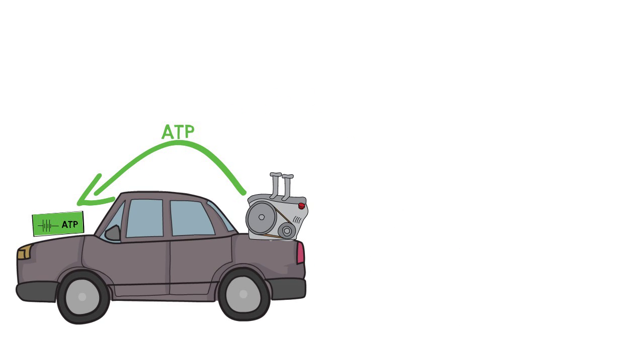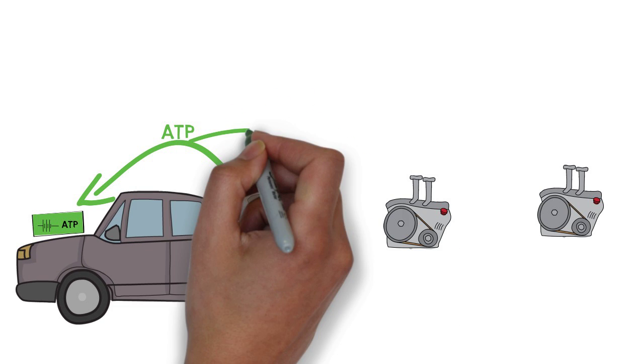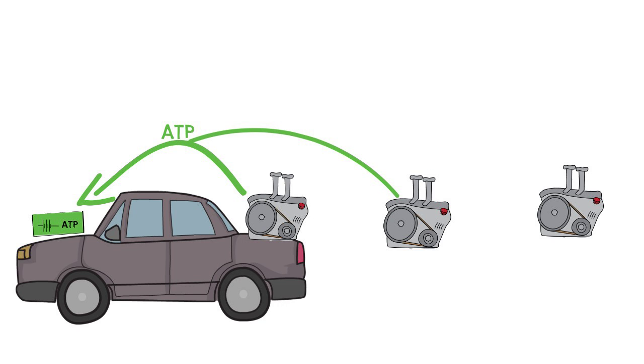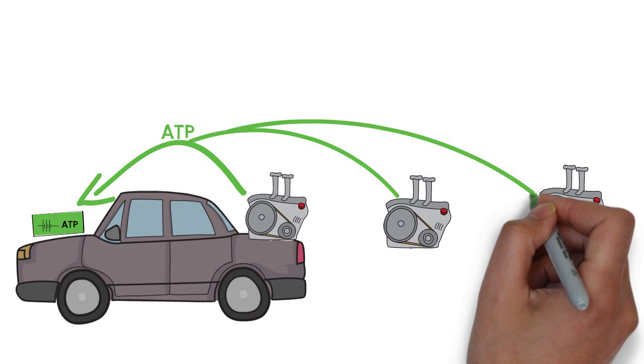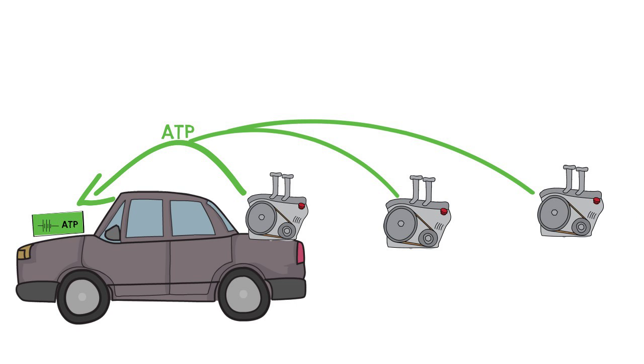The main difference though is where James May's car has just one generator, your body has three generation systems which are simultaneously working to keep these ATP levels topped up. Later on, it will become very important to understand that each of these generation systems also operates at a different speed.